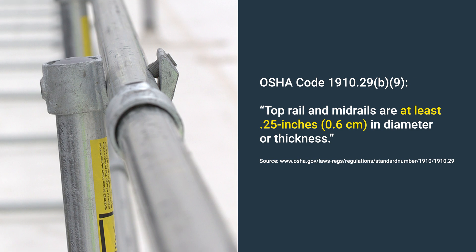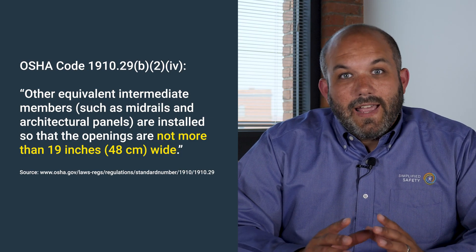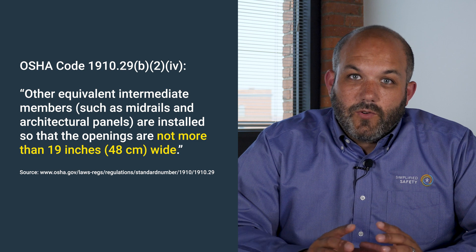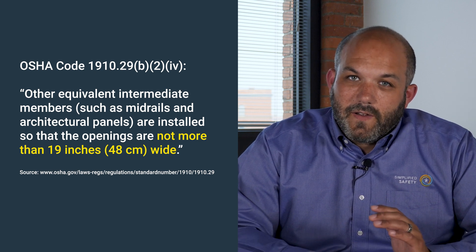Your top rail and your midrail need to be at least a quarter inch thick or a quarter inch in diameter. Nowhere in your guardrail shall a sphere of 19 inches be able to pass through between your top rail and the walking working surface. This is really important as you think about the thickness of your midrail. For example, if you're using steel cabling that's only a quarter inch thick, you may need to use multiple midrails to account for the 19-inch sphere rule.